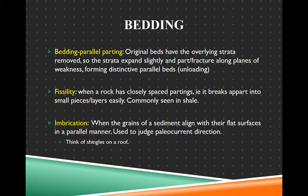Fissility is when a rock has closely spaced partings, allowing it to break apart into small pieces and layers easily. This is very common in shale. When the grains of sediment align with their flat surfaces in a parallel manner, we call this imbrication, and we can use it to judge paleocurrent. So even if a river hasn't flowed for a hundred million years, we can tell which way the water was moving by looking at the imbrication.